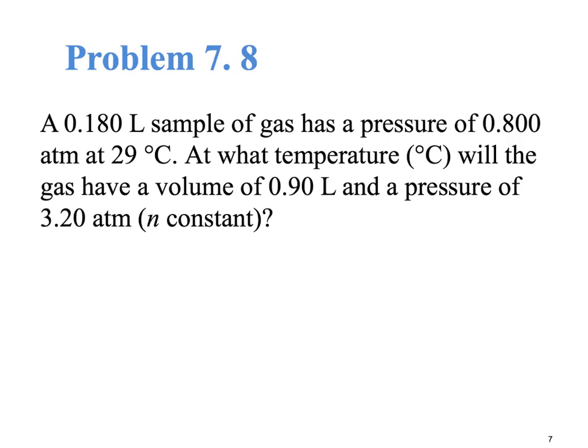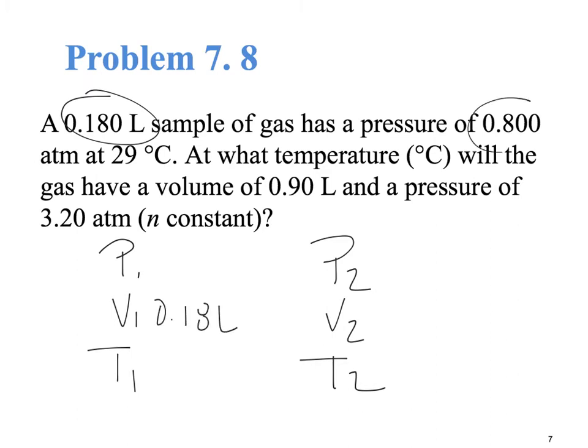We're going to do one problem together. We have conditions P1, V1, T1, P2, V2, and T2. So, we have, this is our initial volume, and the pressure is 0.88 atm, and the temperature, 29 Celsius.